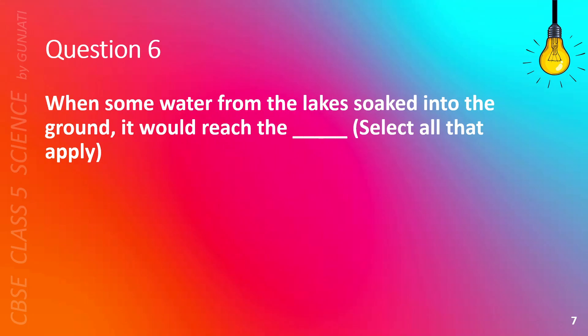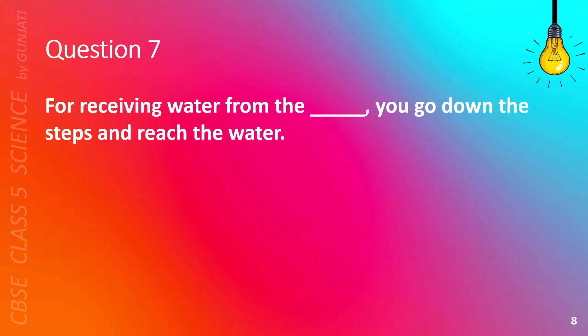Question 6. When some water from the lake soaked into the ground, it would reach the blank. Select all that apply. A. Sea, B. Rivers, C. Wells, or D. Stepwells. The correct answers are C, Wells, and D, Stepwells.